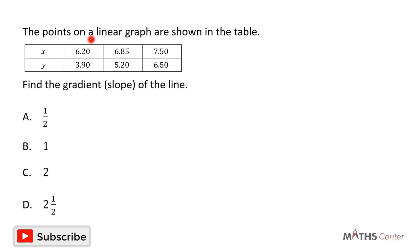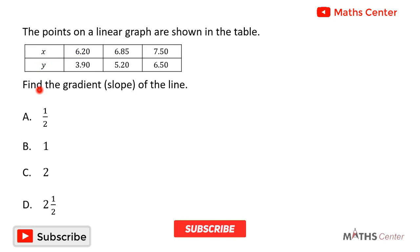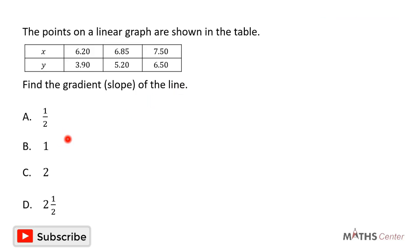The points on a linear graph are shown in the table. We have the table showing the x and y coordinates. Find the gradient or slope of the line. This is a multiple choice question so we solve the question and after that we will pick the correct option. These are the coordinates of some points that fall on a given line.